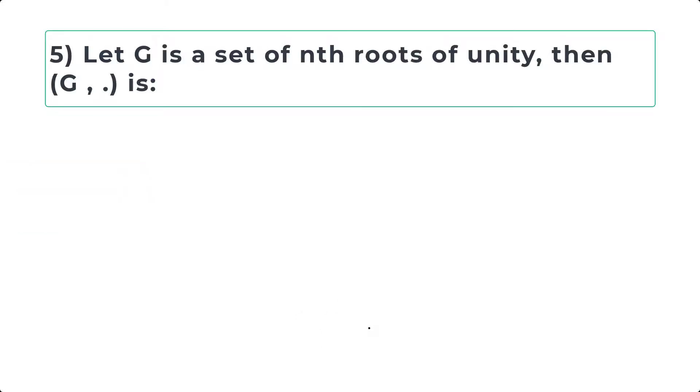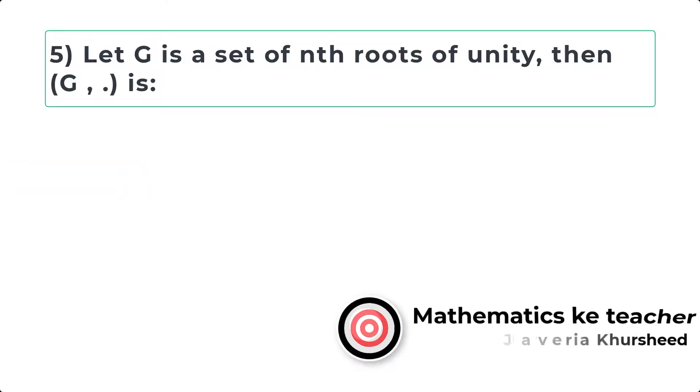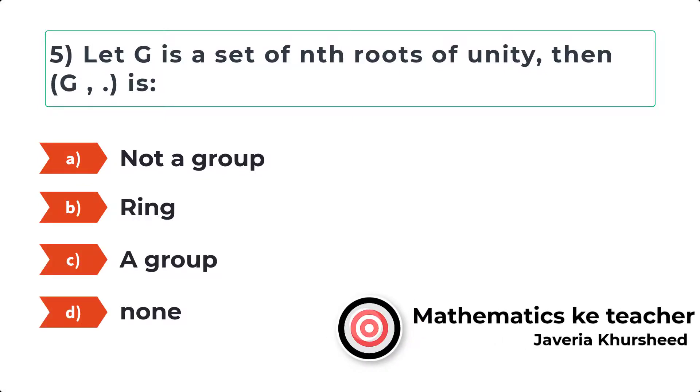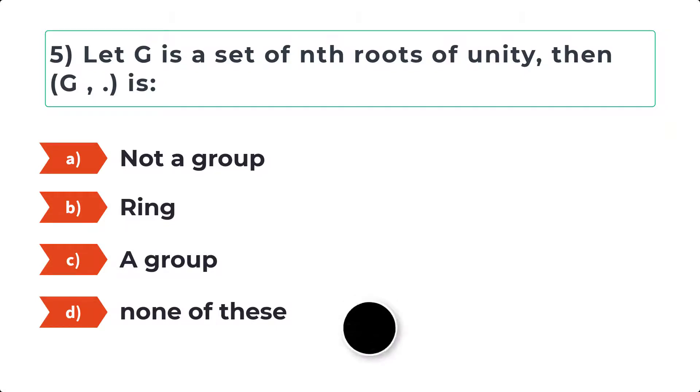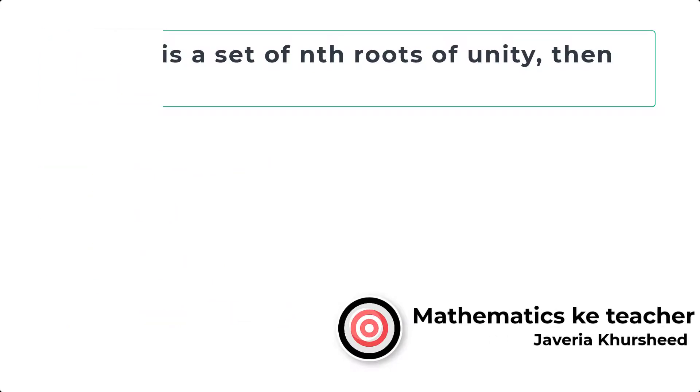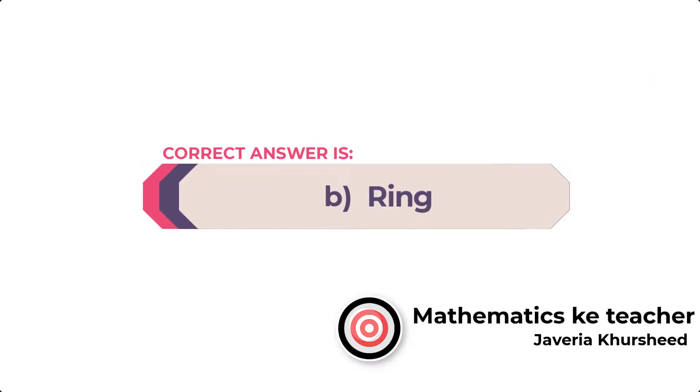Question 5: Let G is a set of n roots of unity. Then G with respect to multiplication is: A, Not a group; B, Ring; C, A group; D, None of these. Correct answer is B, Ring.